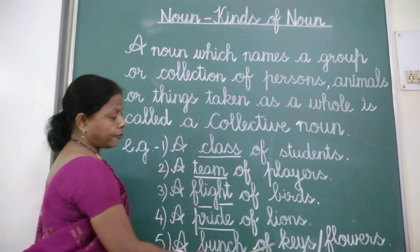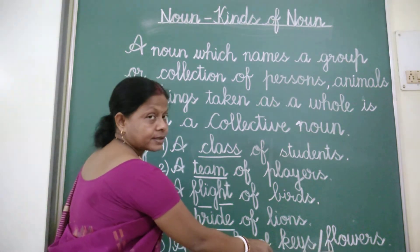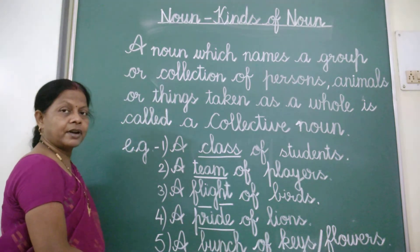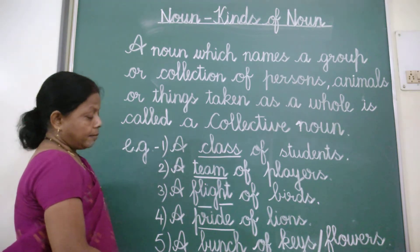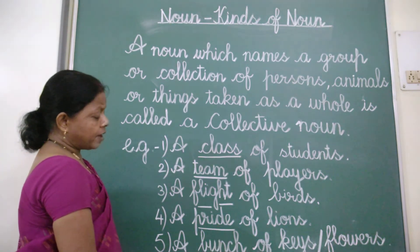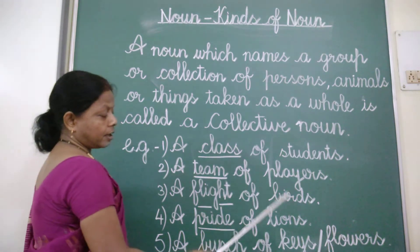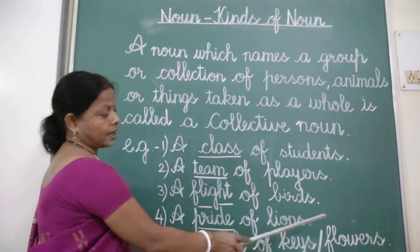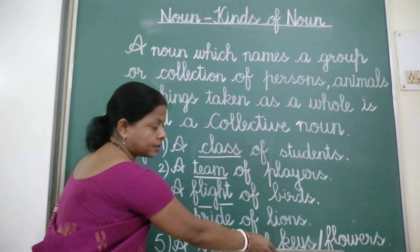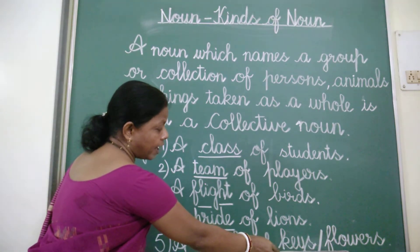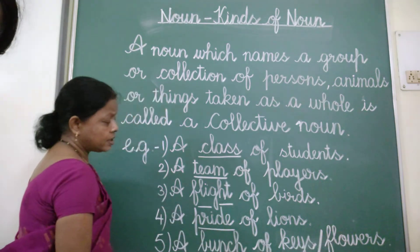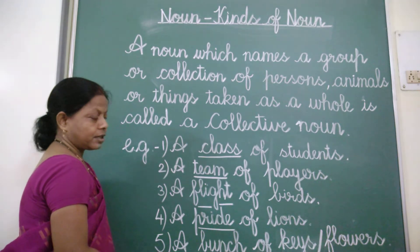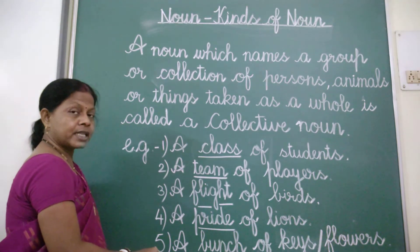A bunch of keys or flowers — here 'bunch' is a collective noun. This collective noun is used for a group of keys or a collection of keys, and also a collection of flowers. A collection of flowers is known as a bunch, and a collection of keys is also known as a bunch.